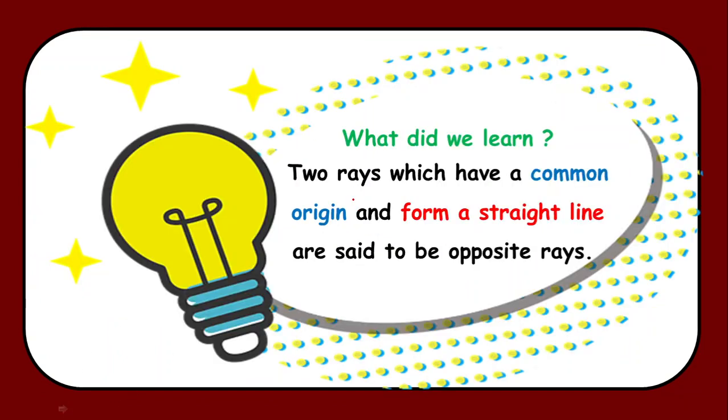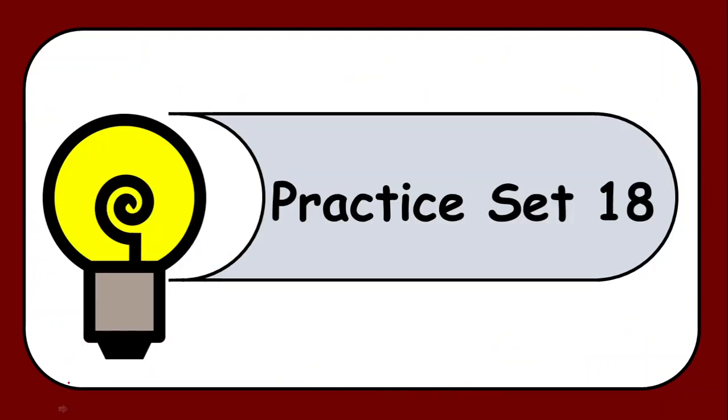Now let's precisely see what did we learn. That the two rays which have a common origin and which form a straight line are always termed as a pair of opposite rays. Now children based on the same we are going to solve practice set 18.